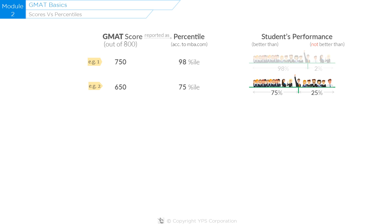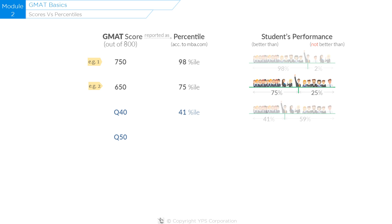Next, let's take a look at quant and verbal scores that compose this overall score out of 800. We will take two scores: Q40 and Q50. Q40 corresponds to a 41st percentile ranking — that is, this student did better than only 41% of students who took the exam. On the other hand, Q50 corresponds to an 86th percentile ranking, meaning this student did better than 86% of people who took the exam.